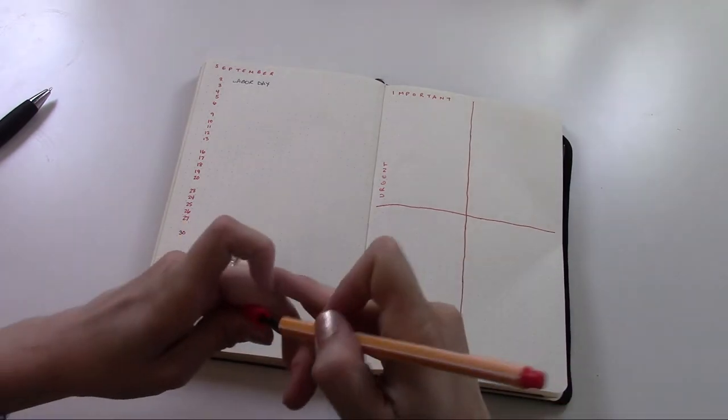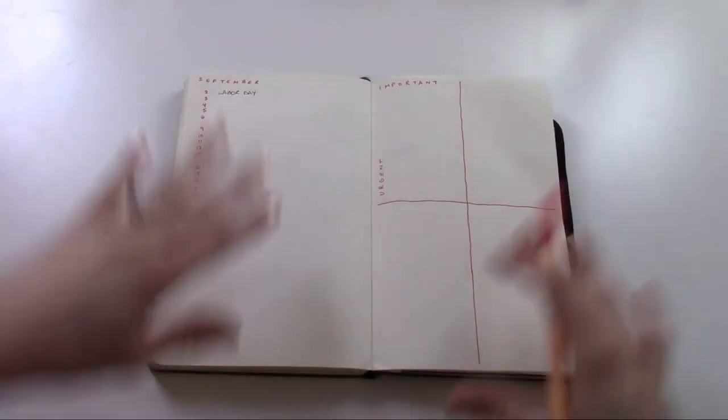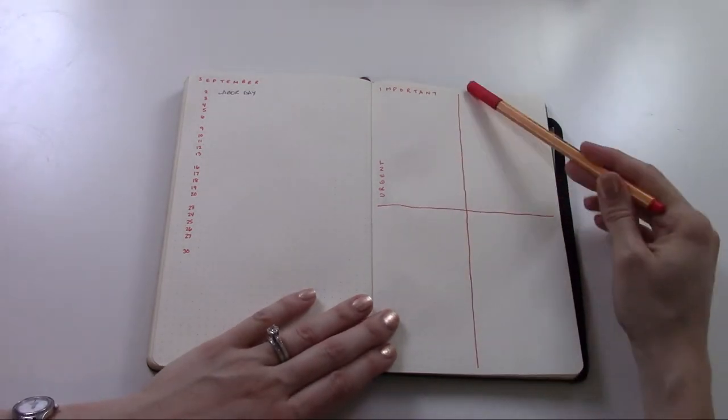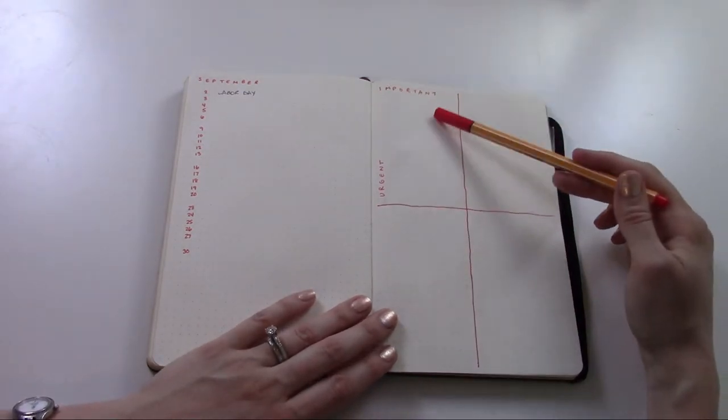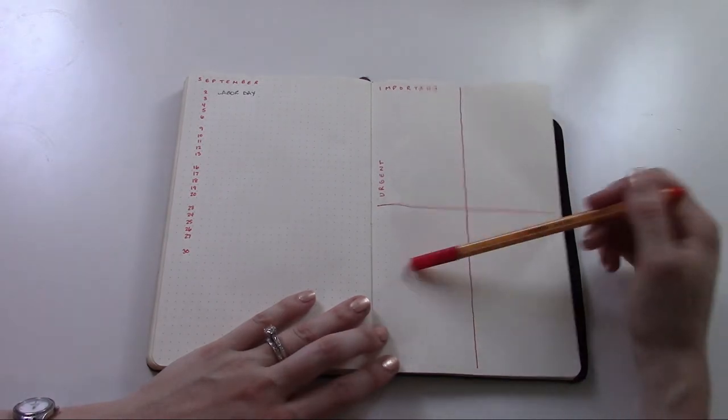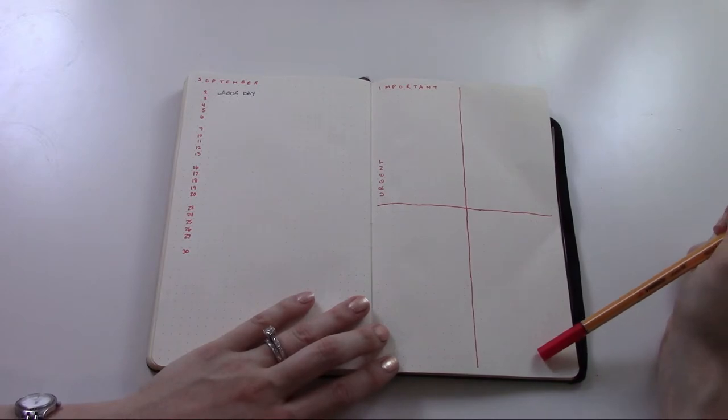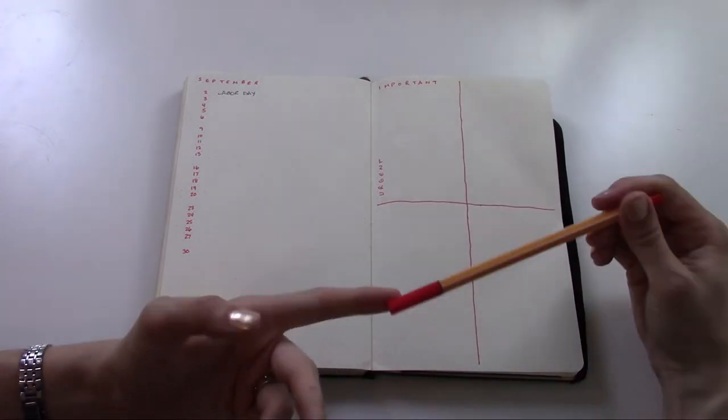All of the tasks that don't have a specific day that I want to assign them to get put on this grid. So if it's urgent, it goes in the top half. If it's important, it goes on the left half. So I focus on these things, and then these things, and then this way. There's a lot of projects on here that are things that I've just been putting off, things like I need to reorganize the file drawer.